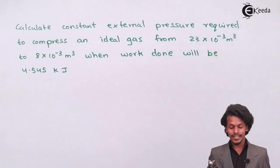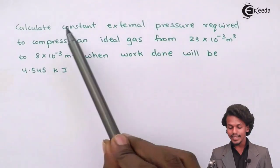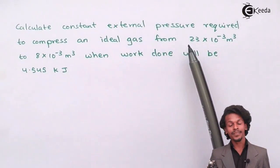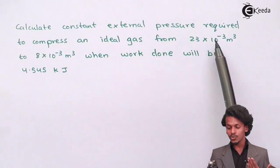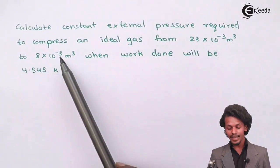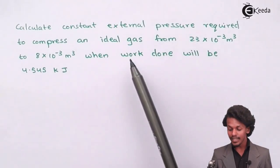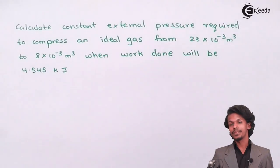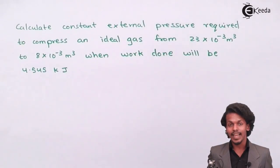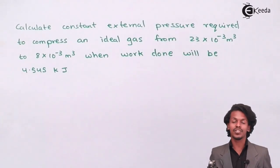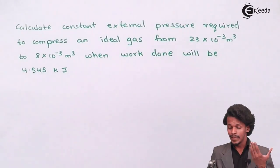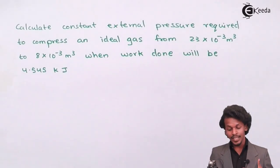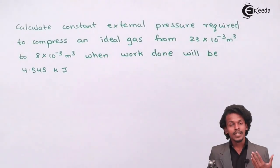The question provided requires us to calculate the constant external pressure needed to compress an ideal gas from 23 x 10⁻³ m³ to 8 x 10⁻³ m³, when the work done is found to be 4.545 kilojoules.